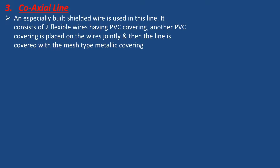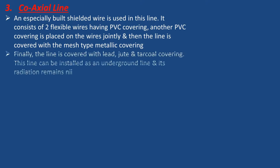The line is then covered with a mesh type metallic covering — aluminium or copper mesh. Finally, the line is covered with lead, jute, and charcoal covering.